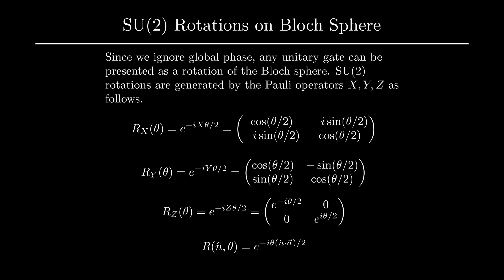In general, we can represent a rotation about axis n, where n in this case is a unit vector, by angle theta on the Bloch sphere as follows.